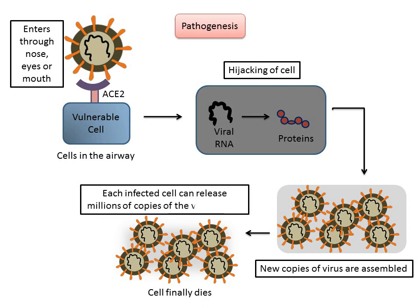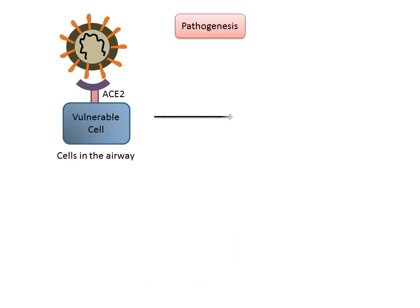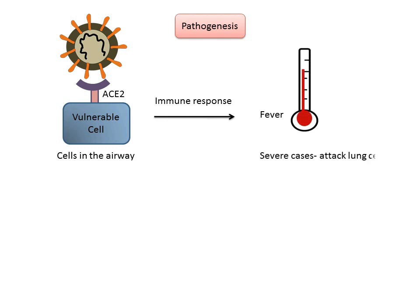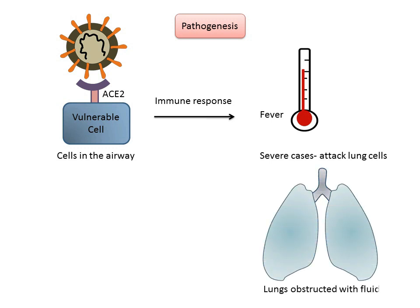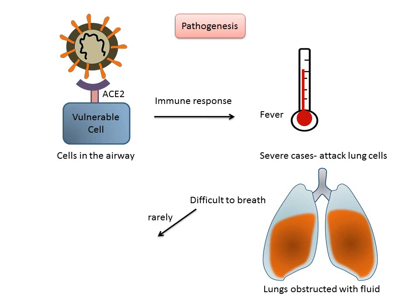Each infected cell can release millions of copies of the virus before the cell finally breaks down and dies. The viruses may infect nearby cells or end up in droplets that escape the lungs. Most COVID-19 infections cause a fever, which occurs as an immune response of the body to fight off the infection. In severe cases, the immune system can overreact and start attacking lung cells. The lung cells become obstructed with fluid and dying cells, making it difficult to breathe. A small percentage of infections can lead to acute respiratory distress syndrome and possibly death.